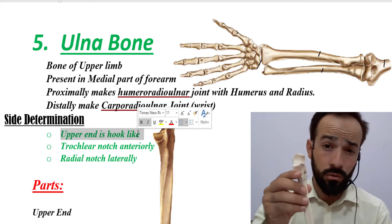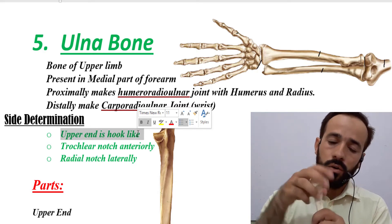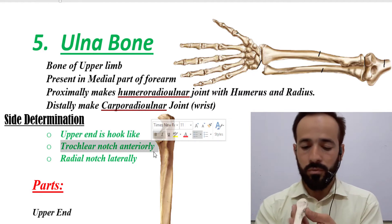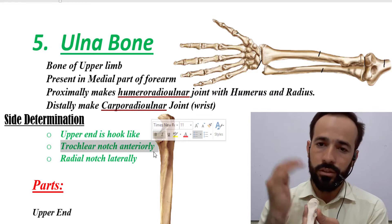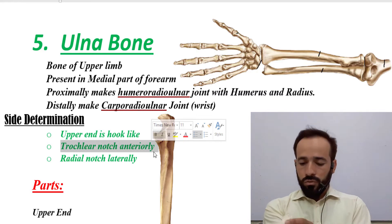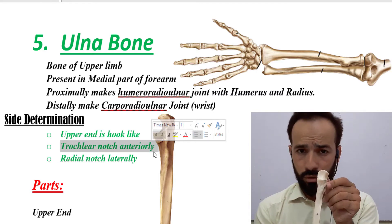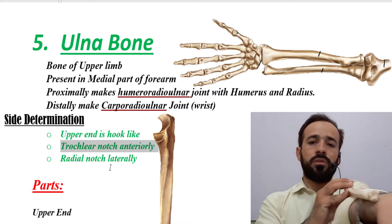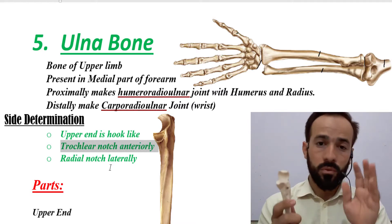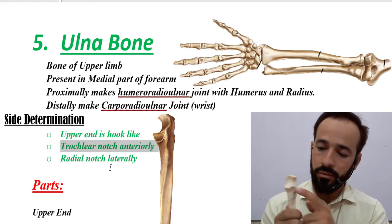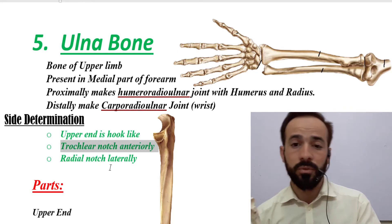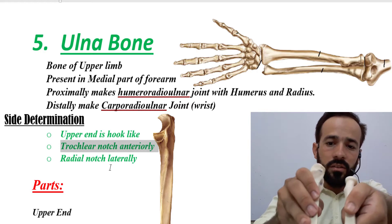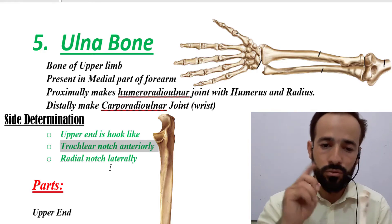Let's practice: keep the hook-like part upper, the trochlear notch anteriorly, and the radial notch laterally. If the radial notch ends up medially, then this bone is not from the right forearm. If the radial notch is lateral, this bone is from the left forearm. The radial notch should be kept laterally because the radius bone is present in the lateral part of the forearm.